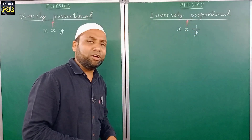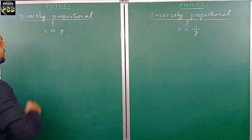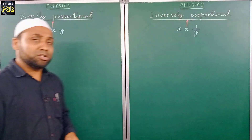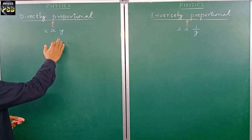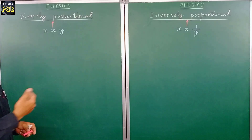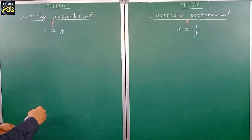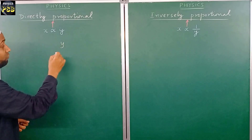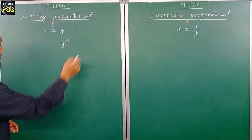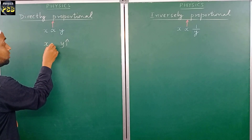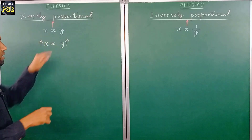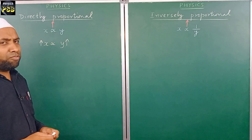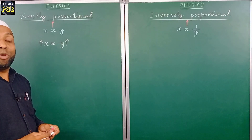This expression is read as x is directly proportional to y. When we say x is directly proportional to y, it means that with an increase in the value of y, the value of x will also increase. Let me write this on the board — y value increases, and along with it x value will also increase, because they are proportional to each other. Let me explain this with a simple numerical example.